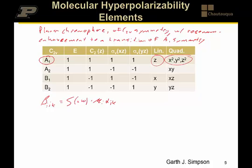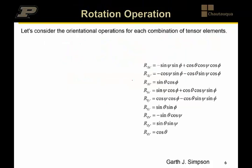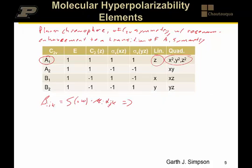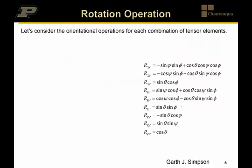That means the first index in beta, corresponding to i, must be z, since the transition moment is along z. The second indices, for alpha_jk, can be x, y, or z. But if we're planar and define the plane of the chromophore as the xz-plane, then we can exclude y. This leaves just two non-zero elements in the molecular tensor: beta_zzz and beta_zxx.